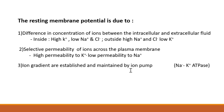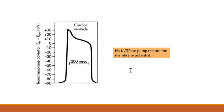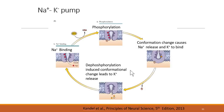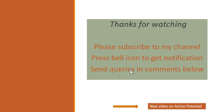So, resting membrane potential depends on three things: different ion concentrations inside and outside, selective permeability across the membrane — specifically high potassium permeability — and the ionic gradient maintained by the sodium-potassium pump as the major contributor. Please subscribe to my channel if you like my videos and press the bell icon for notifications.